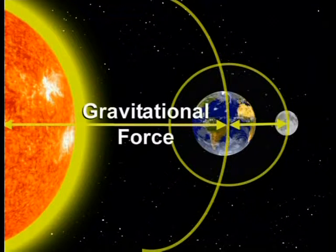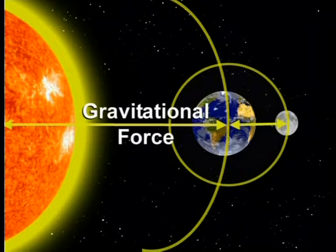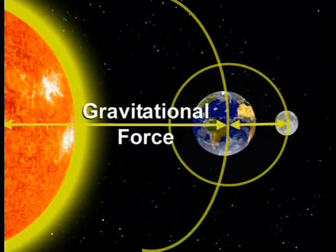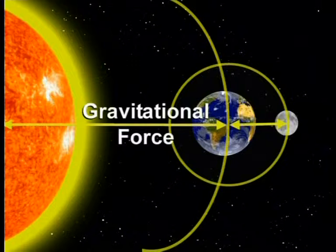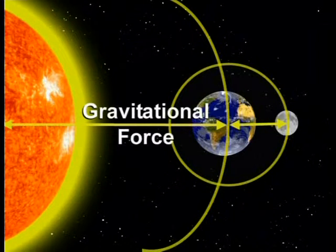In our solar system, the sun is the most massive object. The earth has a large mass too, but is a lot smaller than the sun. Even though there is a large distance between the earth and the sun, there is still a large gravitational force between these two objects. It is this force due to gravity that keeps us in a fixed orbit around the sun.